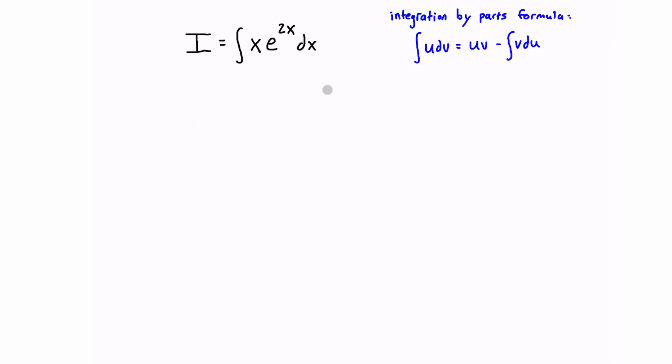So just so you're aware, or so you remember, the integration by parts formula is right here. It's integral of u dv is equal to uv minus the integral of v du.